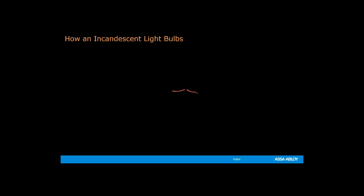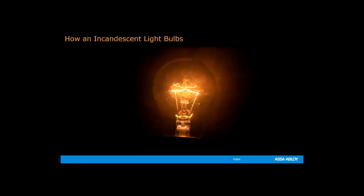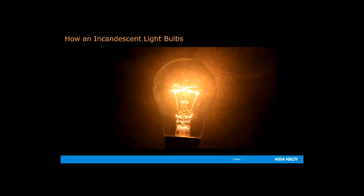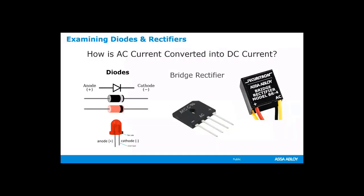Light bulbs work by passing large amounts of current through a thin filament, which is basically a wire. The filament gets so hot that it starts glowing and emitting light, and this process is very inefficient — less than 5% of the energy going into the bulb gets turned into light, and the rest gets turned into heat. That explains the difference between how an LED produces light opposed to an incandescent light bulb.